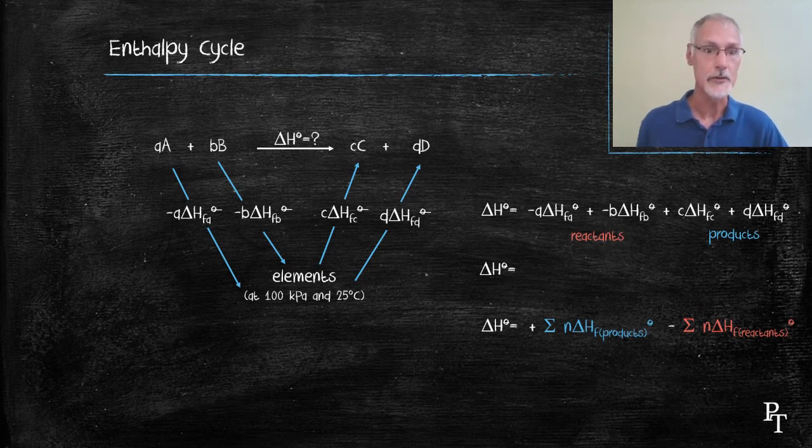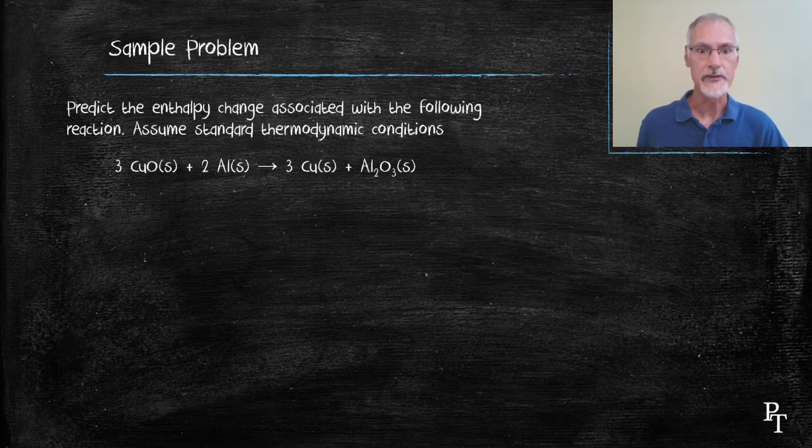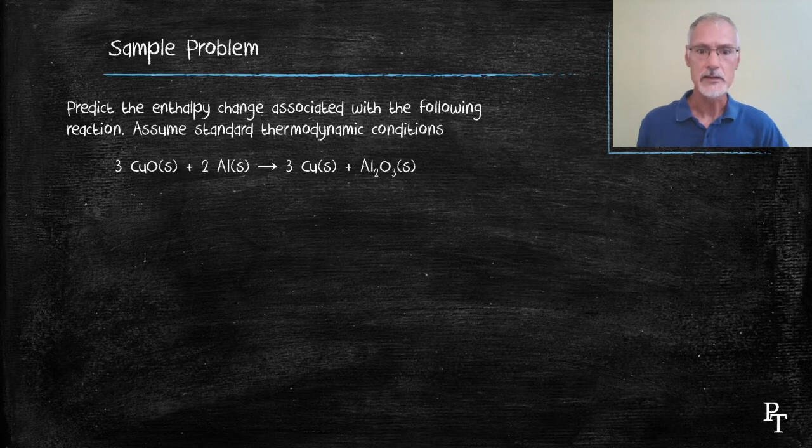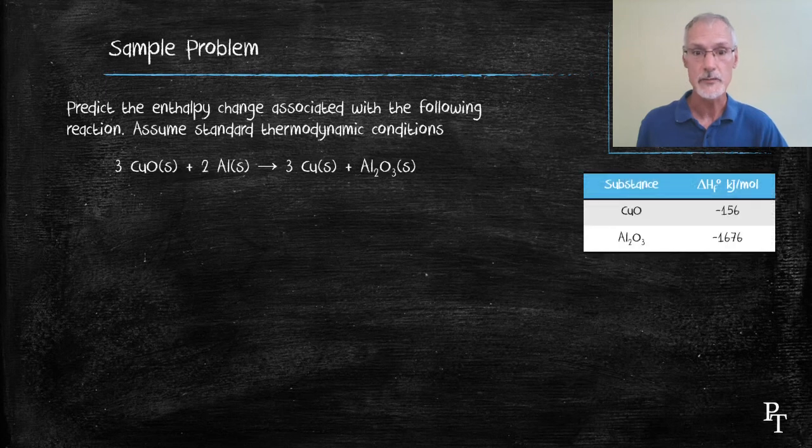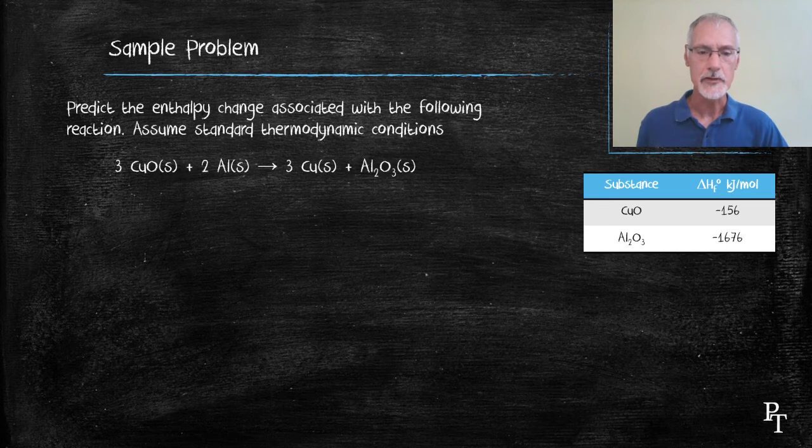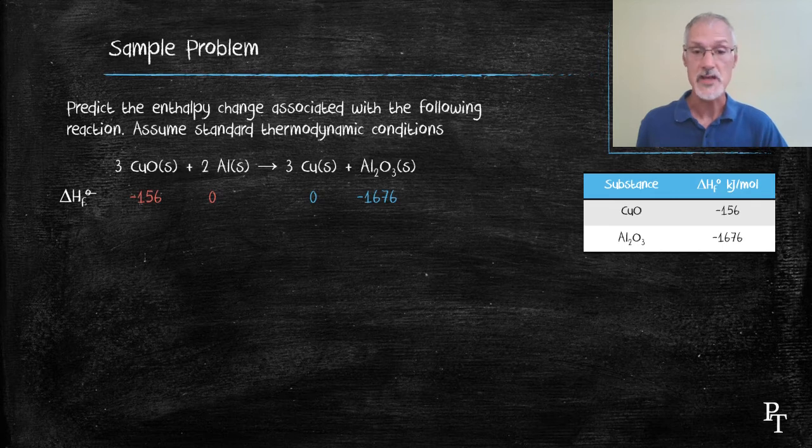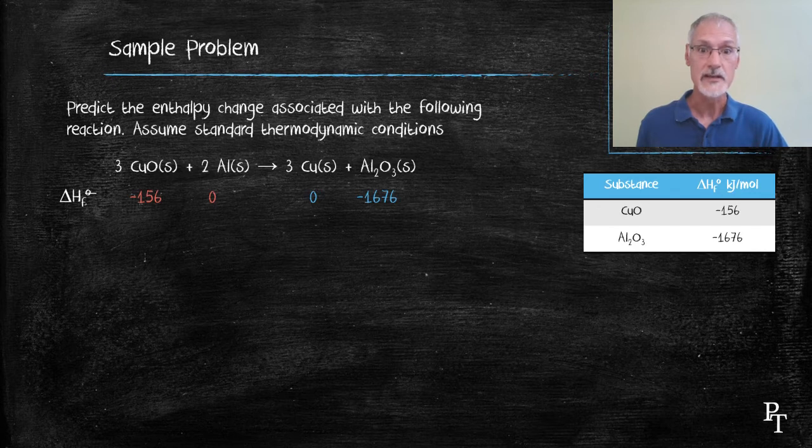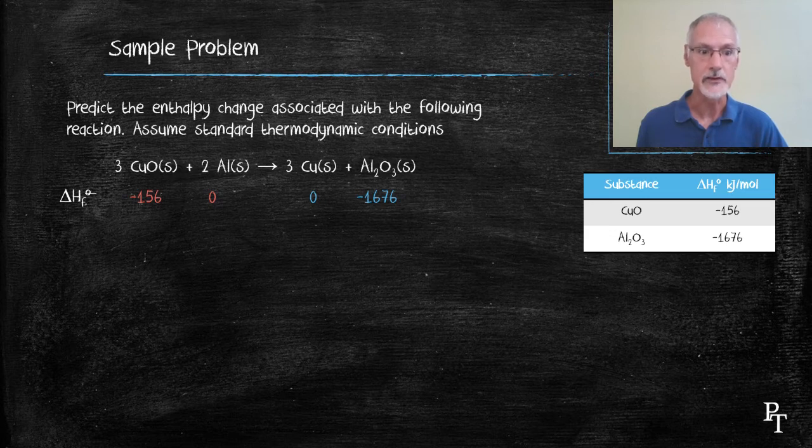Let's apply that now to an example. Here's an example where I have both elements and compounds together. I need to look up their heats of formation data. That could be in your IB data booklet or provided to you. You can find many of them on the web. Next thing I'm going to do is underneath each of these particular compounds and elements write what their heat of formation is. I also remember that the heats of formation of any element that's at standard conditions is zero. So the heat to make aluminum solid from aluminum solid would be zero. Likewise, copper solid from copper solid would also be zero.